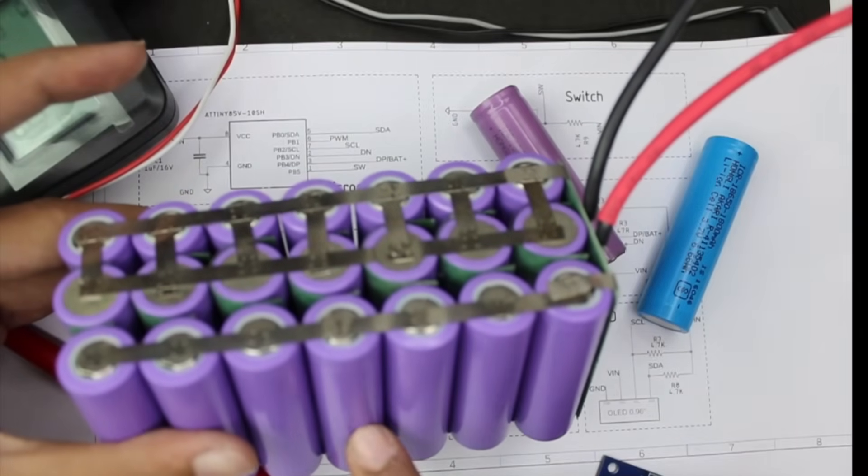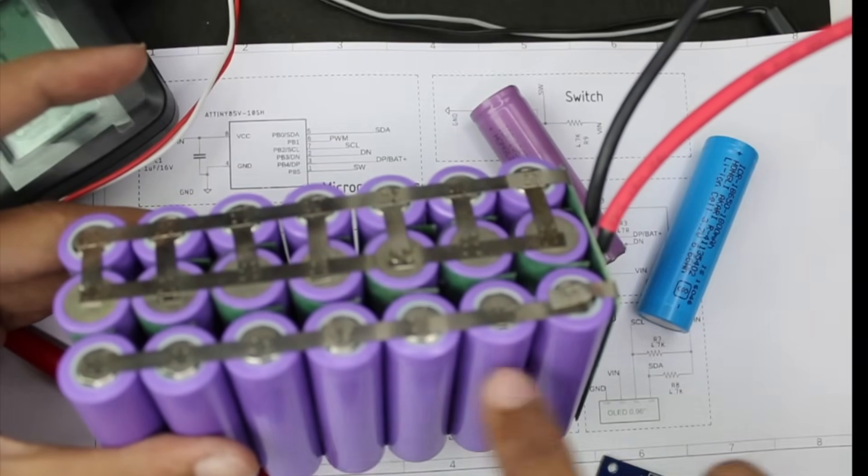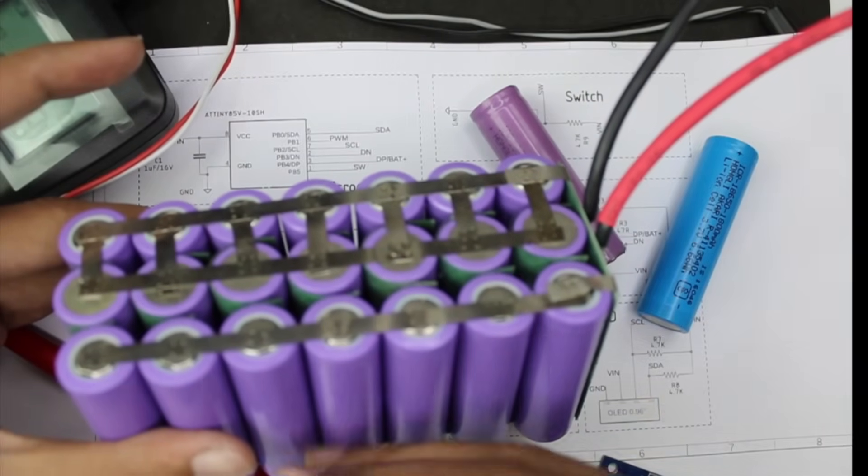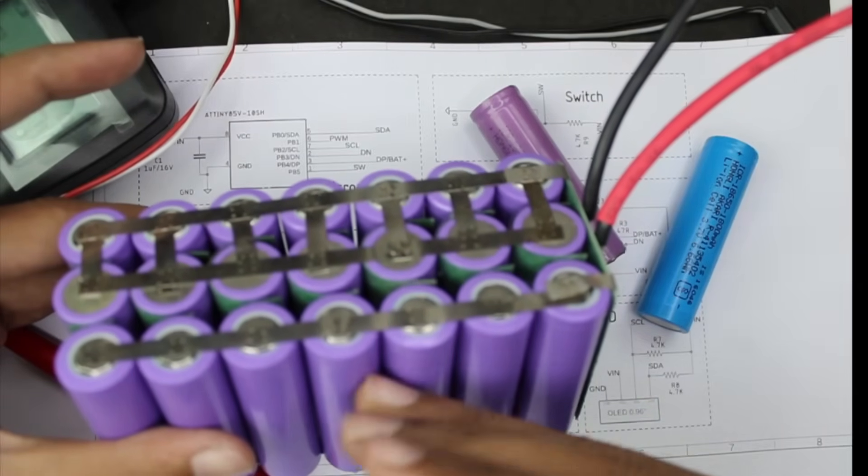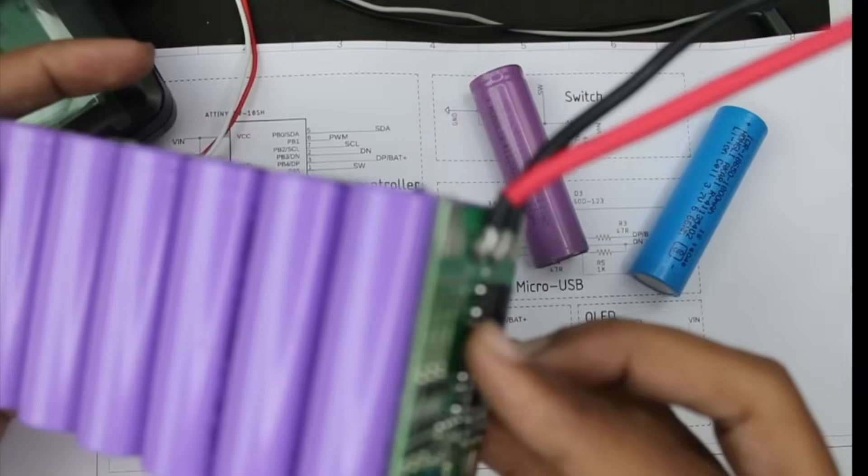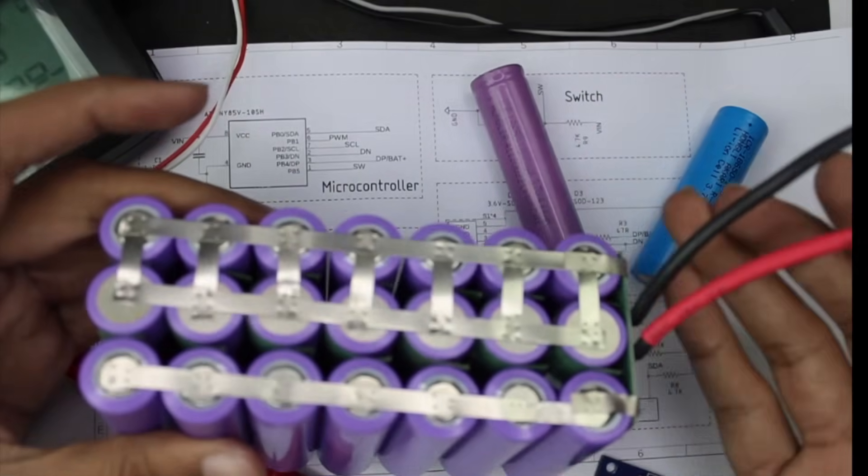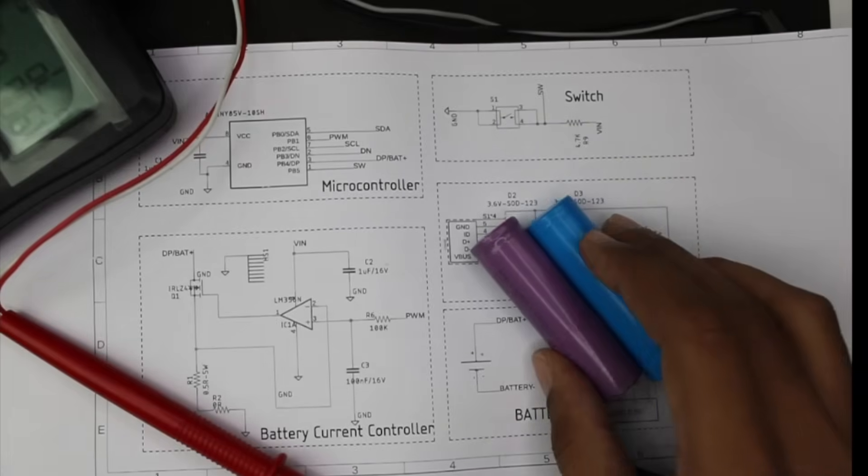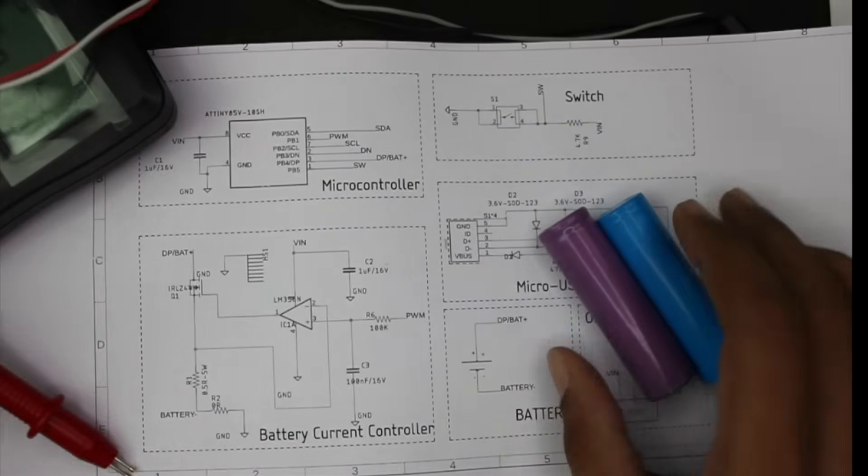If this cell has very low IR, it will try to push more current than the other cells and get discharged faster. While charging it will accept more charge and get charged fast, and the BMS will cut off the pack before it charges or discharges completely. Now we know how our meter works and the importance of IR.